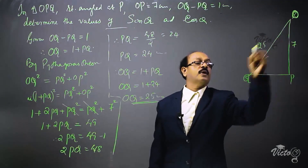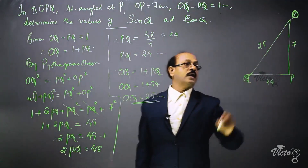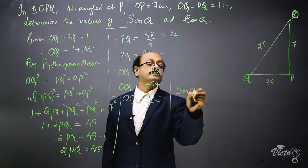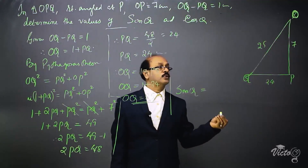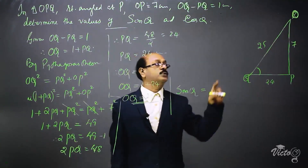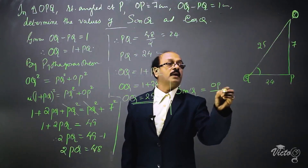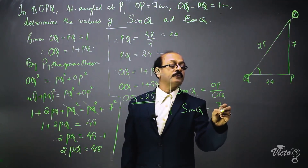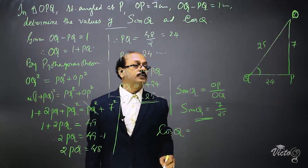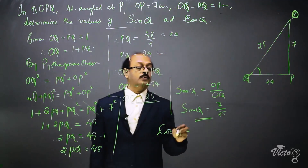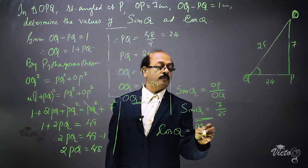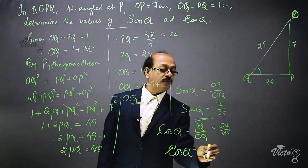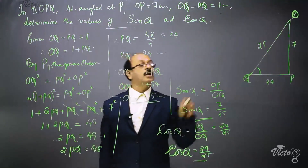Now all three sides of triangle OPQ are known: OP = 7, PQ = 24, OQ = 25. Sine Q equals opposite side over hypotenuse, that is OP divided by OQ, so sine Q equals 7 by 25. Cos Q equals adjacent side over hypotenuse, that is PQ divided by OQ, so cos Q equals 24 by 25. Thus the values of sine Q and cos Q are obtained.